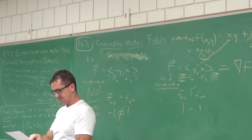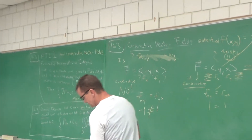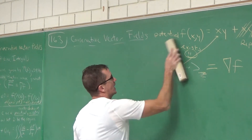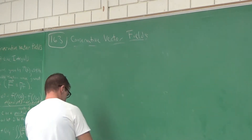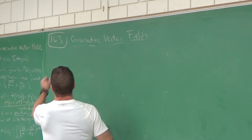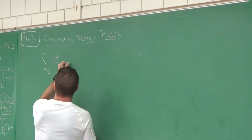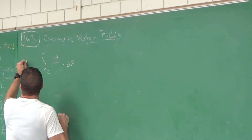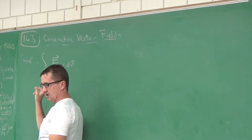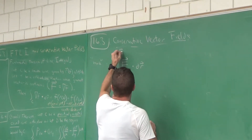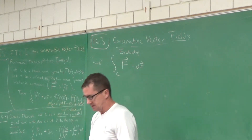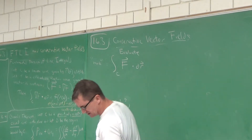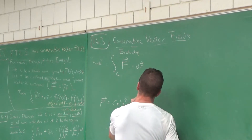Let's look at problem number 5. They want us to evaluate a line integral — a line integral of a vector field, which finds work done by the vector field. The vector field is F equals x squared y cubed i plus x cubed y squared j.